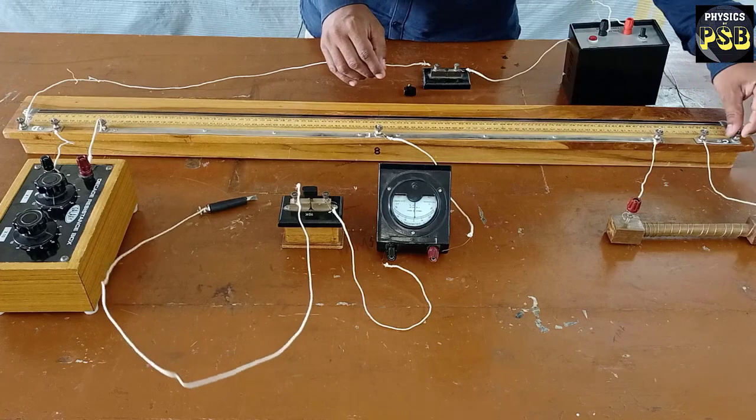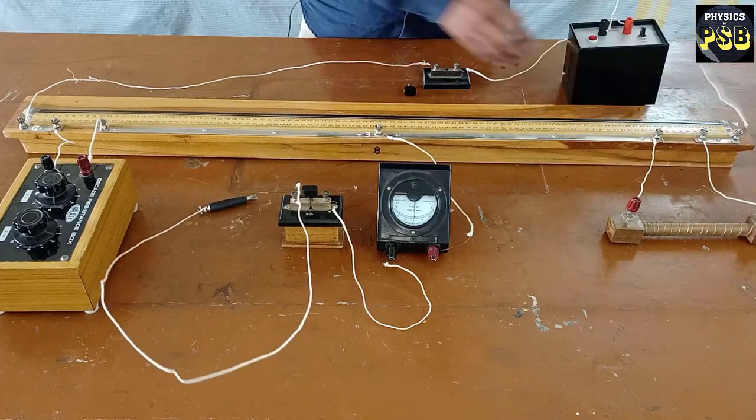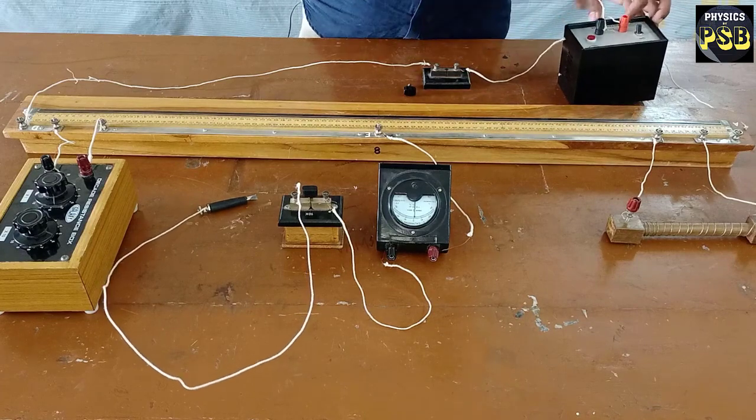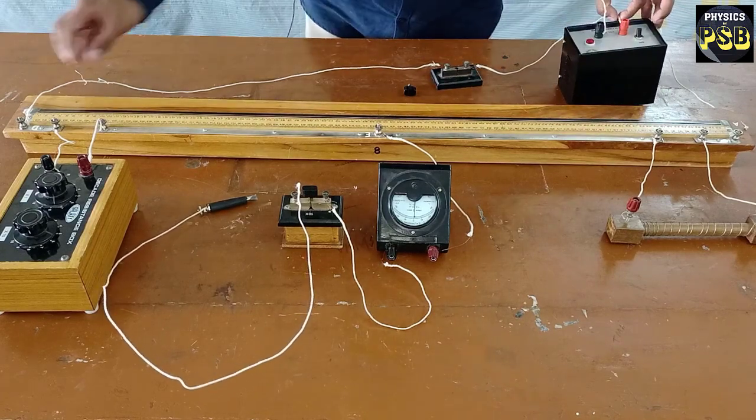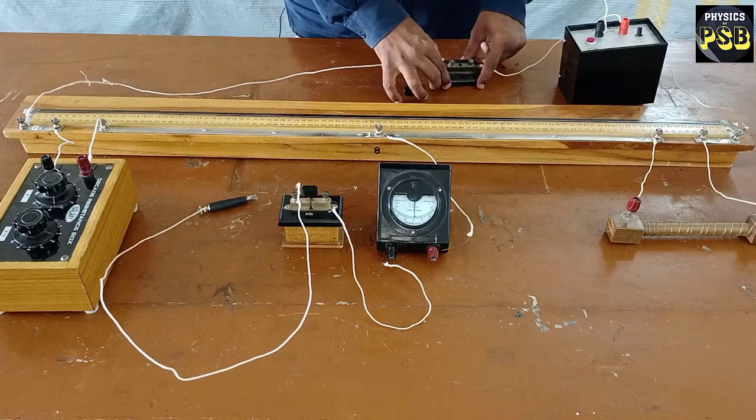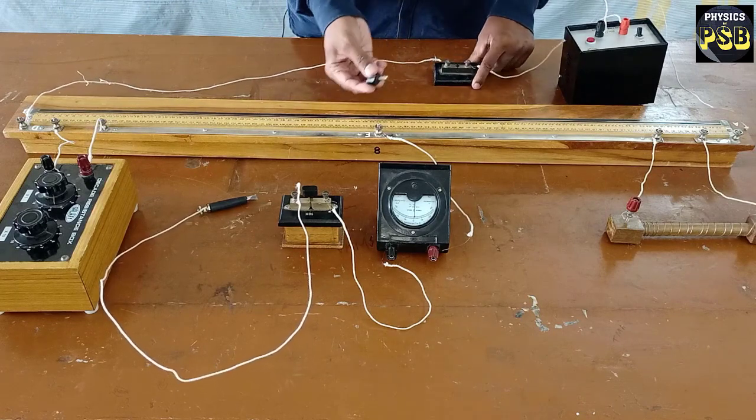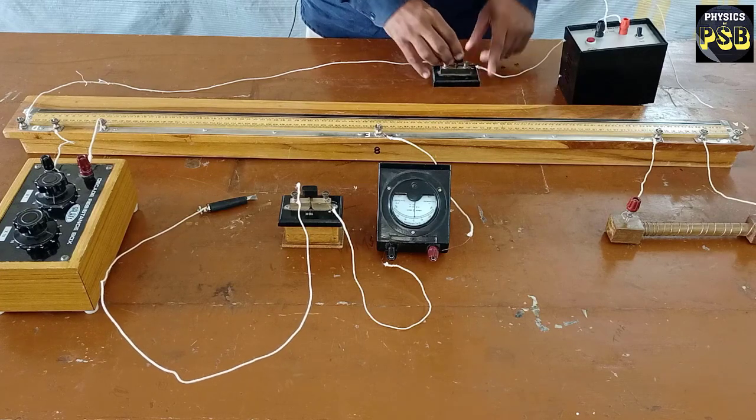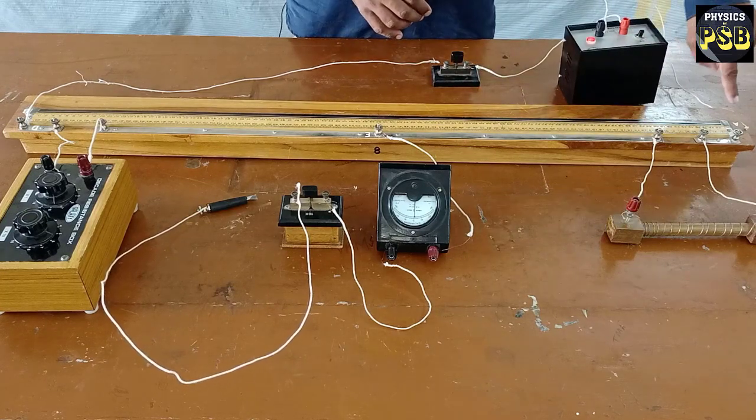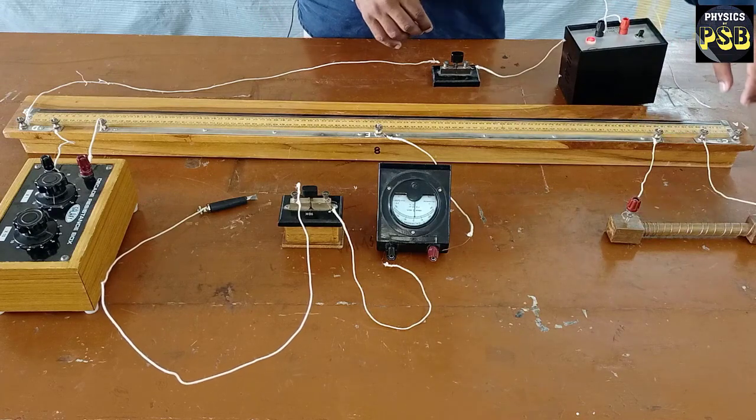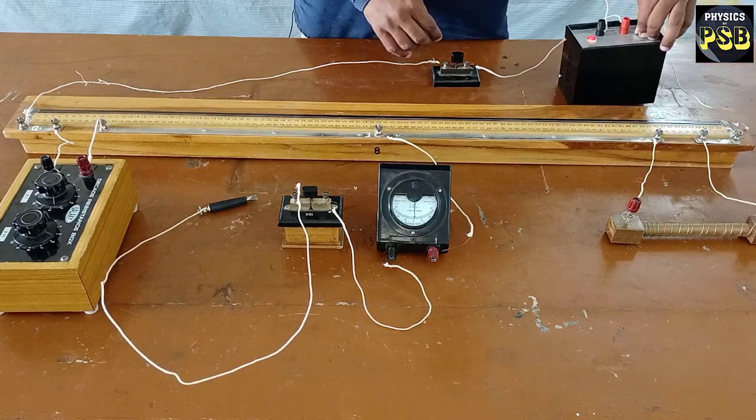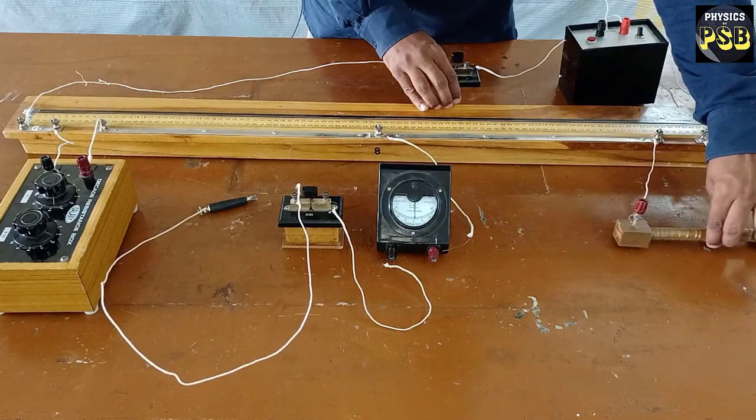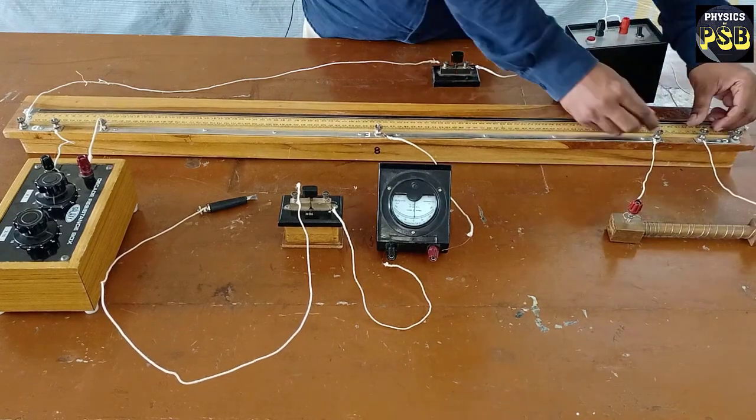To point E, a jockey is connected through a galvanometer and a high resistance. End A is connected to the negative terminal of the power supply, and the positive terminal is connected to end B through a plug key. When I place this plug key and turn on, current flows through the meter bridge.